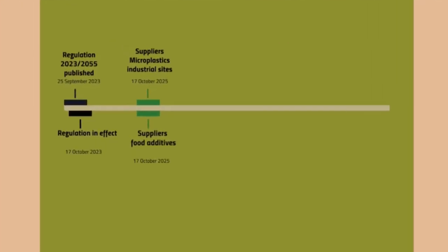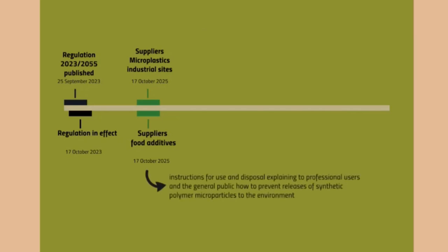Next up, same date: suppliers of food additives will also have to give instructions for use and disposal, explaining to professional users and the general public how to prevent the release of synthetic polymer microparticles to the environment. Again, the safety data sheet can be used — but since the general public doesn't have access to a safety data sheet, it would be an idea to use the label or a leaflet accompanying the product.